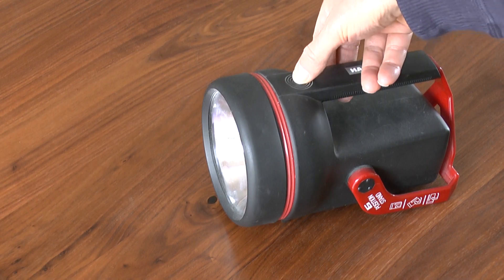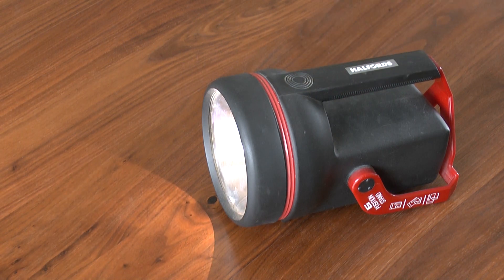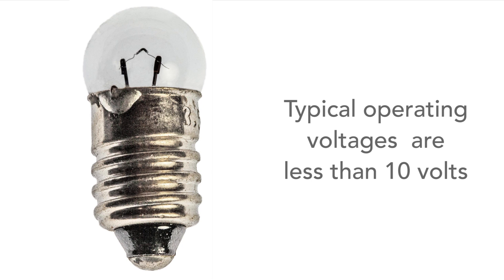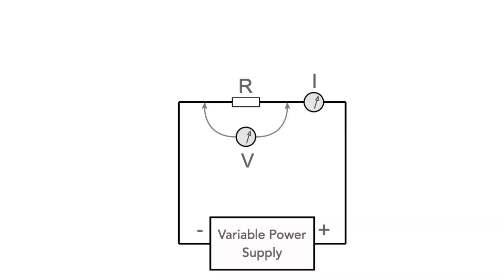Many torches also use filament lamps and it's possible to look at how they respond at different voltages without using the high voltages needed for domestic lighting lamps. It's possible to use the same circuit as before to measure the current and voltage, replacing the resistor with a torch filament lamp.